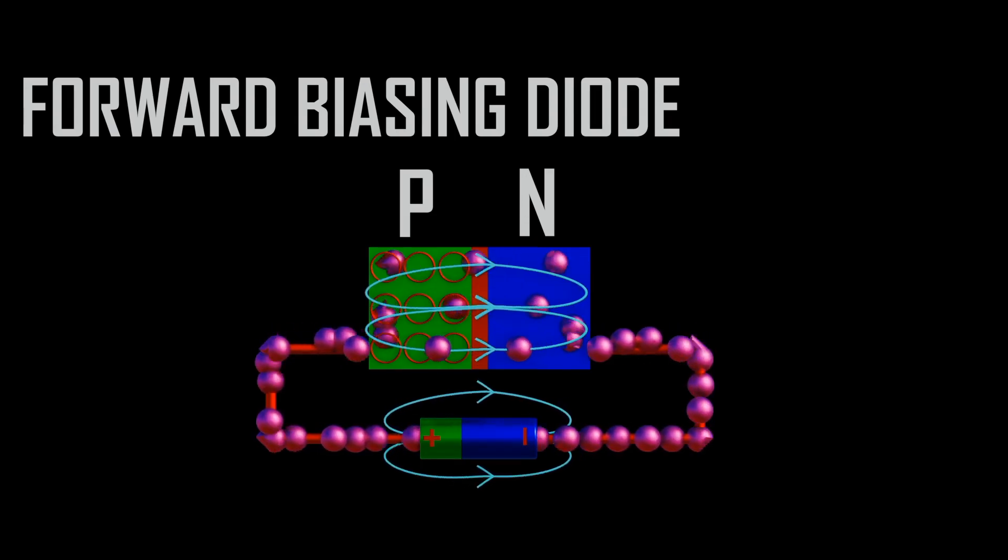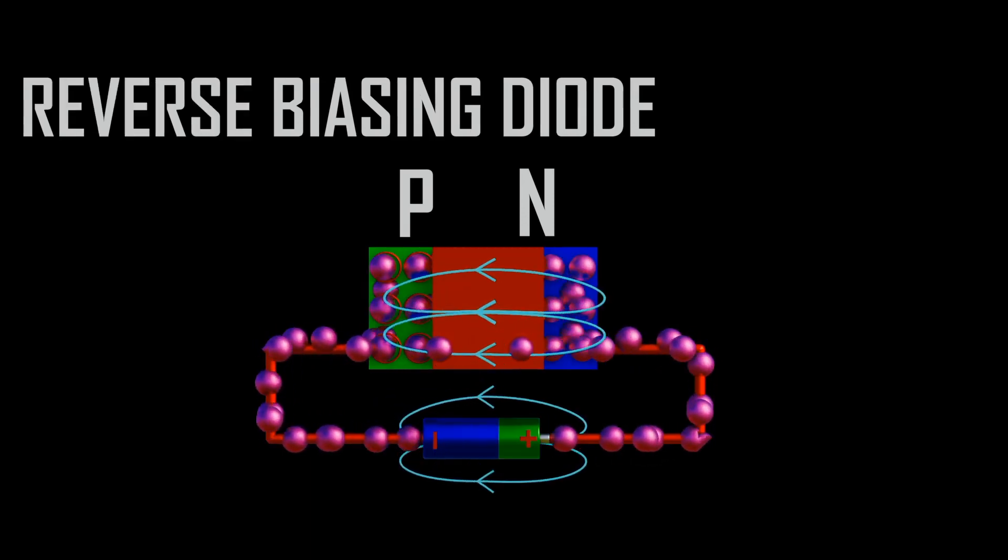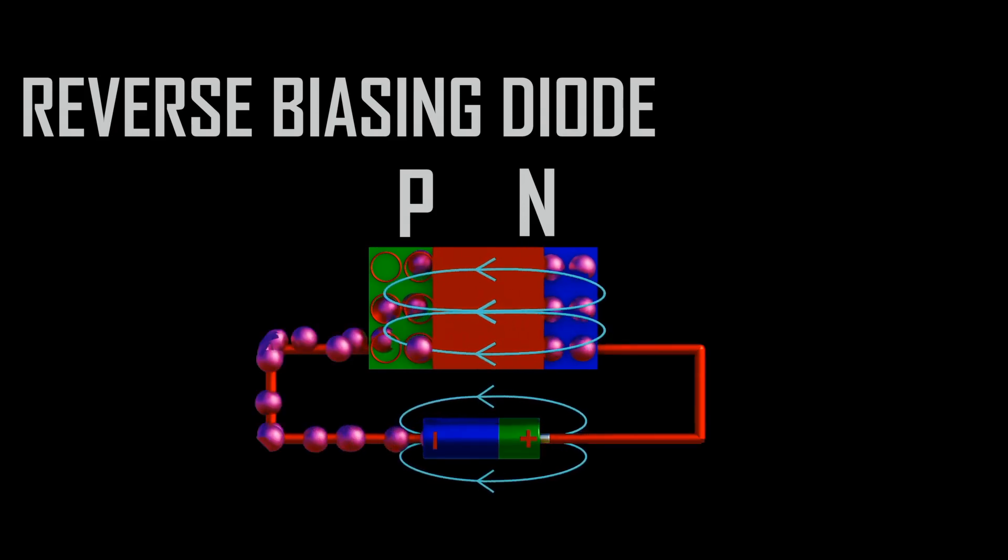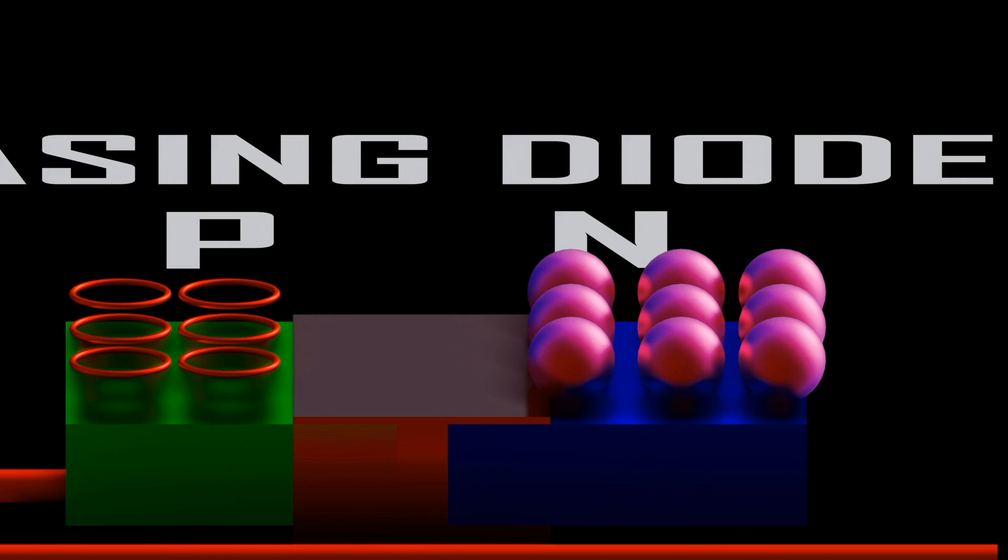For an electron or hole to jump across the depletion region, it depends on the strength of the electric field. When we supply voltage across the P-N junction, two main things happen: one, the electric field is formed; two, the photons are emitted.